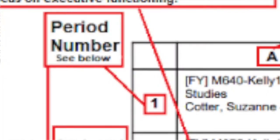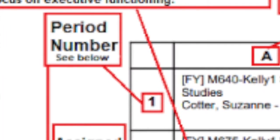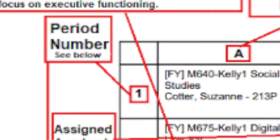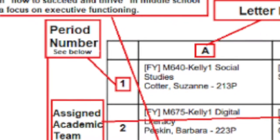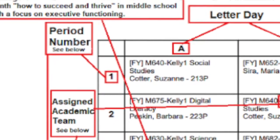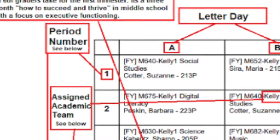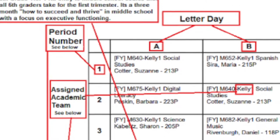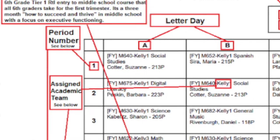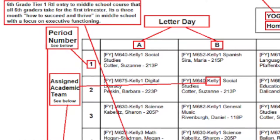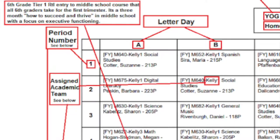Where it says period one, that's your first period, then second, then third — you just go through the rotation like that. Our schedules have a six-letter cycle. Say on A day you'll have gym class, but on B day you won't have gym class. It's just a way to organize which classes you have each day.